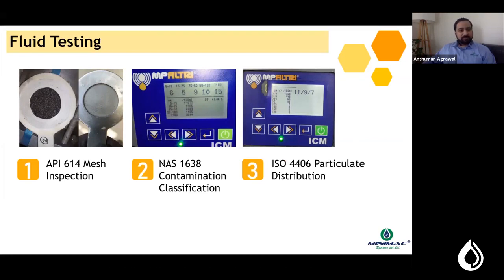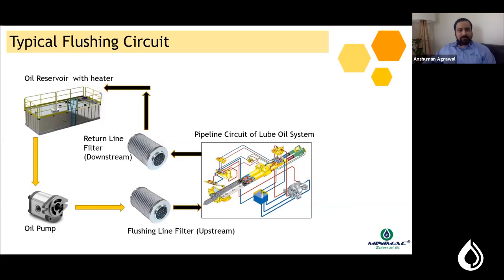The fifth cornerstone is fluid testing, with three major parameters. First is API 614 mesh inspection: a mesh screen is inserted into the return line downstream of the pipeline being flushed to collect and analyze any dust or debris. Once mesh inspection is cleared — the primary inspection — you proceed to the secondary inspections: NAS 1638 and ISO 4406. Most industry standards reference all three inspection parameters.